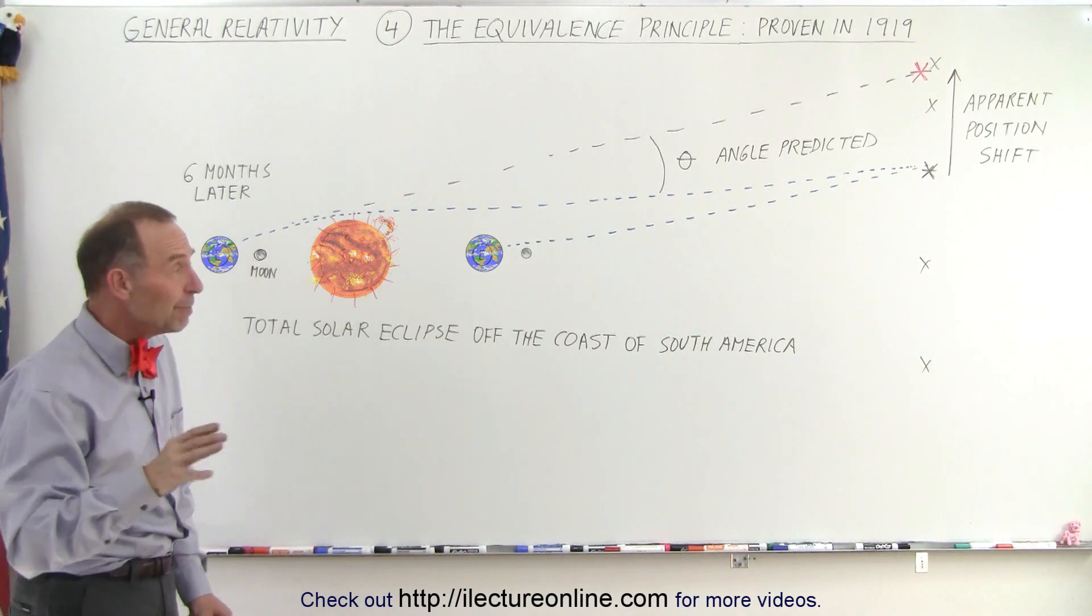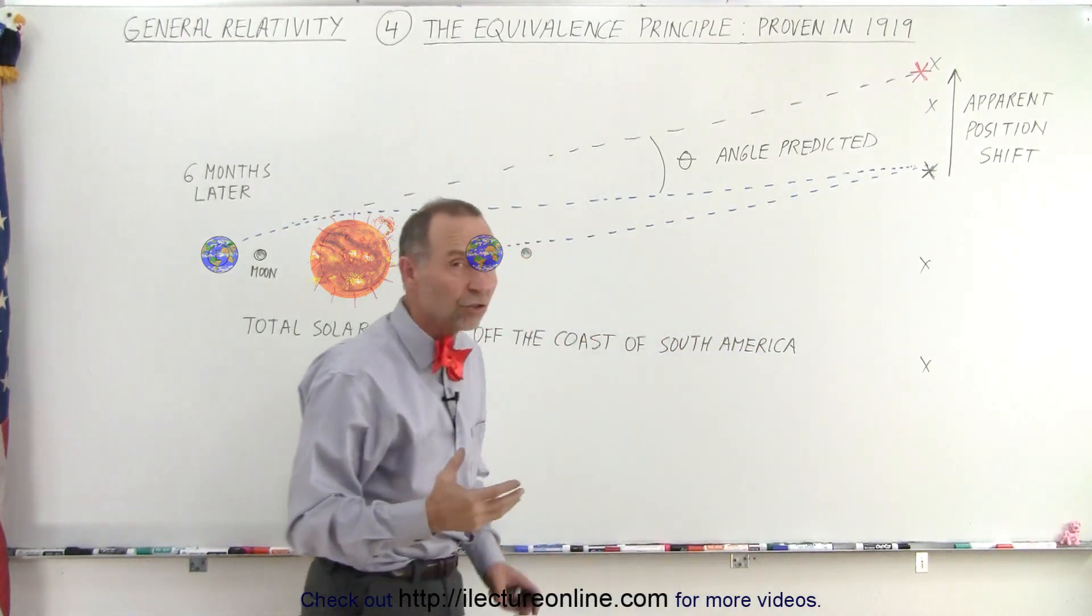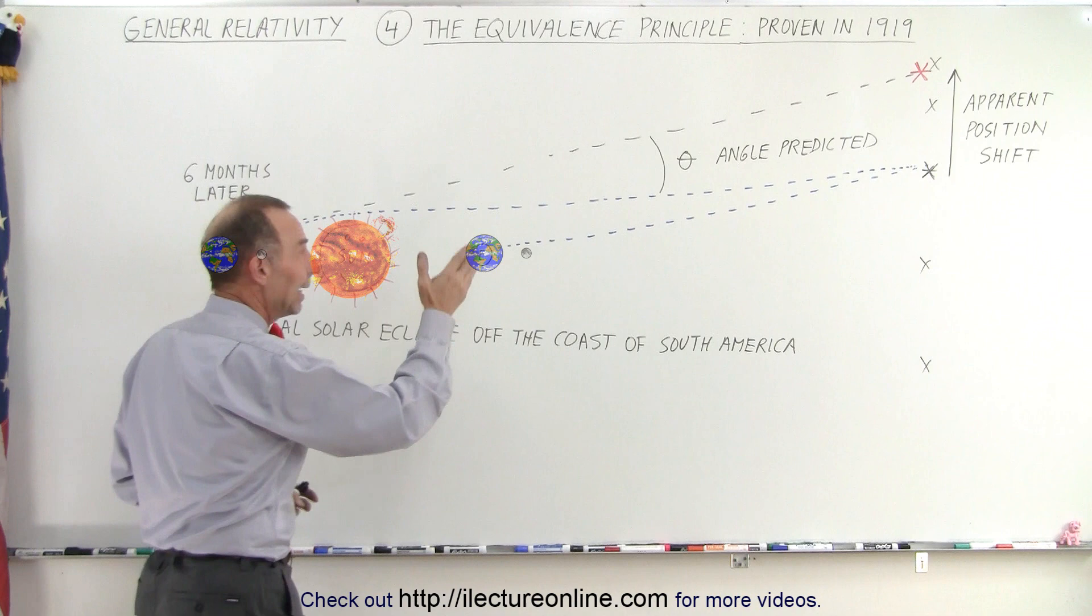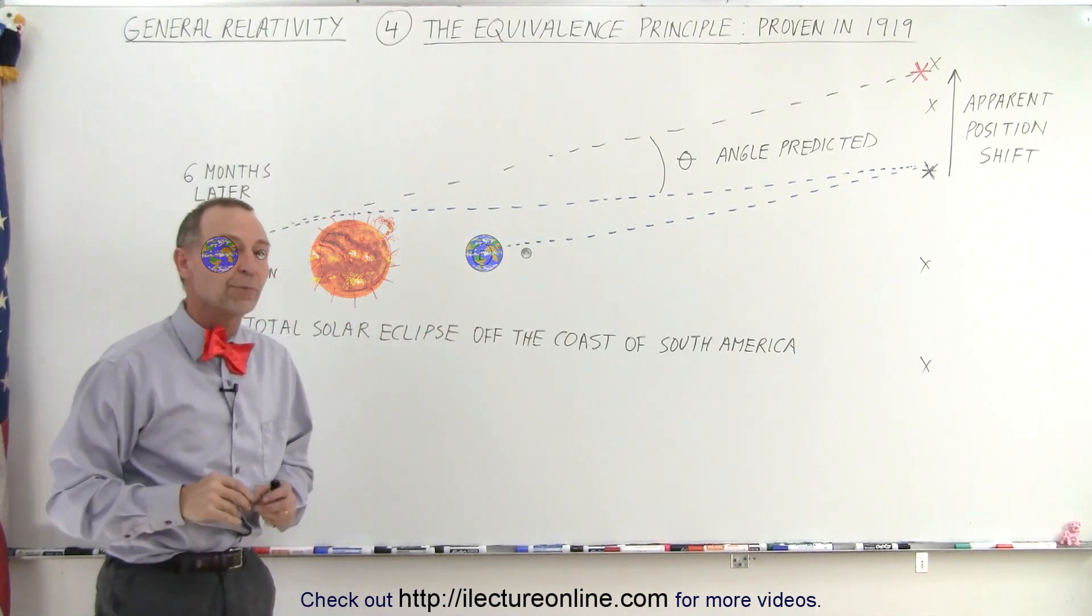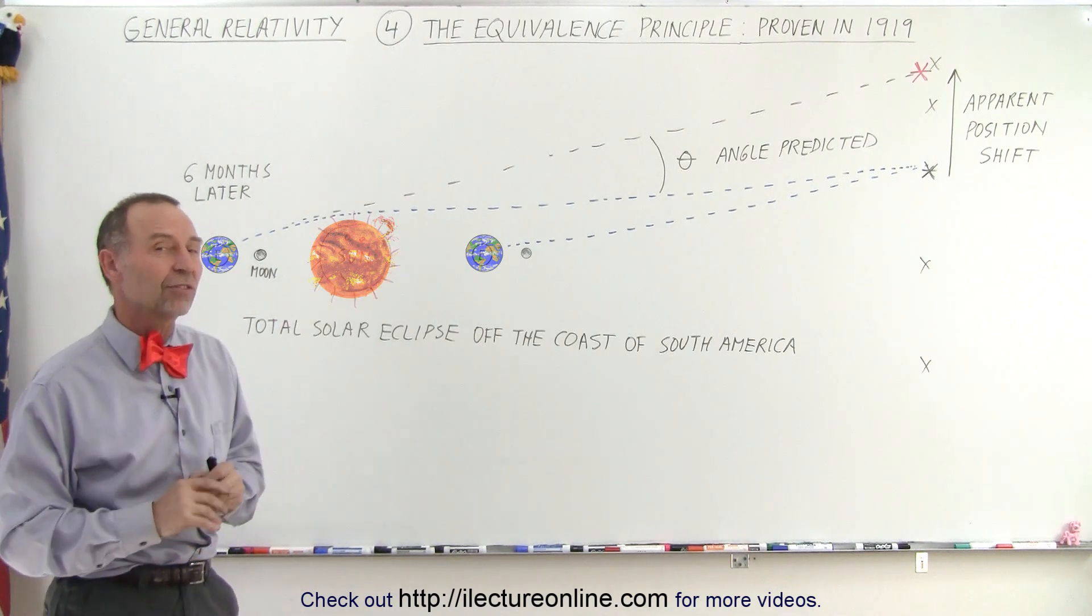And at that moment, for a few minutes, they were able to see the sky darken again, and the brightest of the stars would reappear. And he told them, take a picture again, and the stars will have changed their position relative to the other stars, not affected by this, because they were at different locations in the sky.